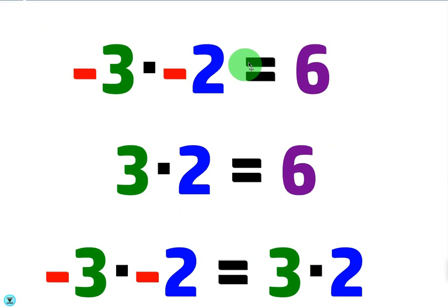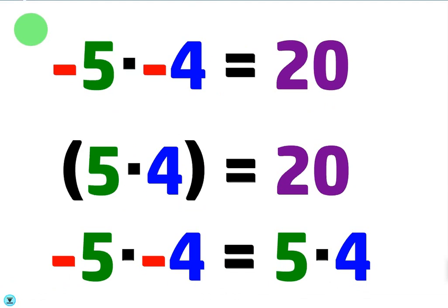So negative 3 times negative 2 is the same as 3 times 2, they're both positive. That's another way of looking at it. Here's another example, negative 5 times negative 4 is 20, but it's the same as 5 times 4 which is 20.